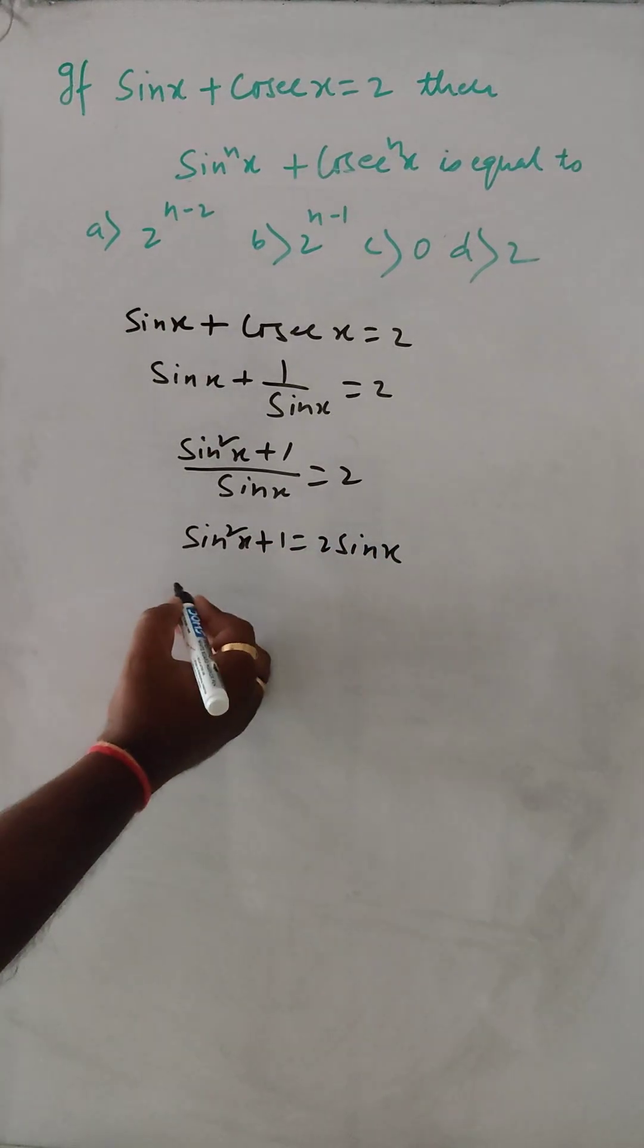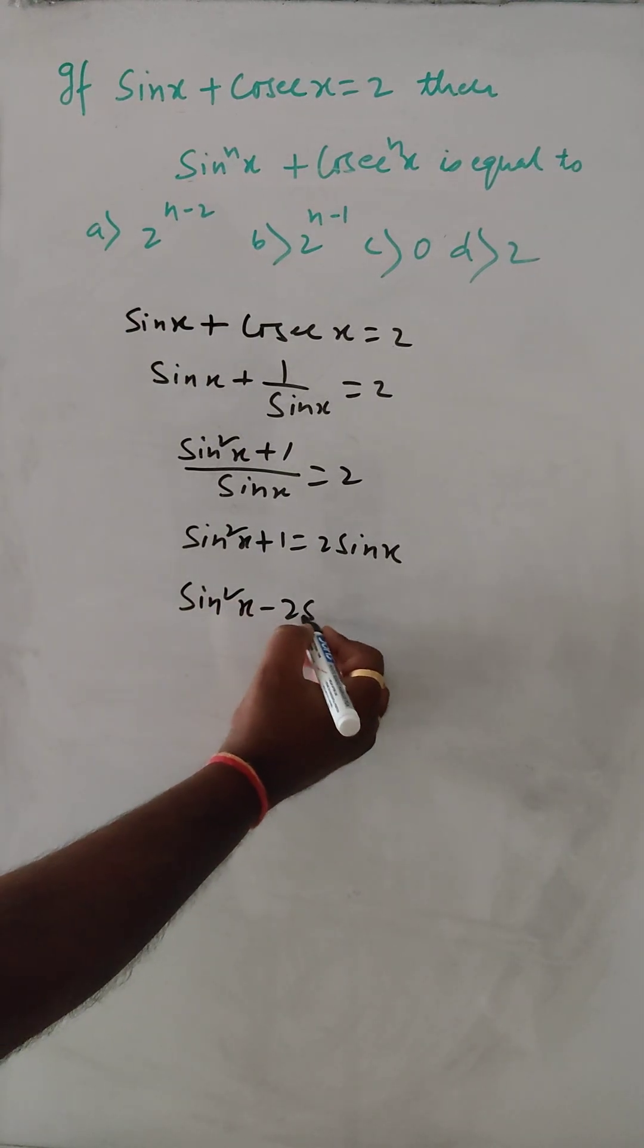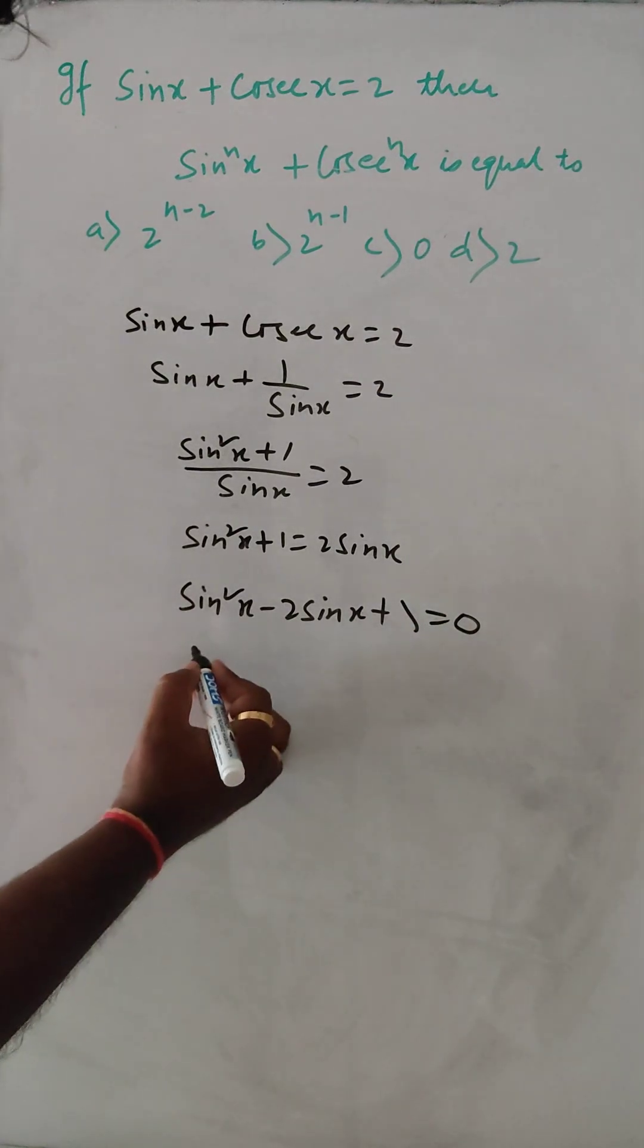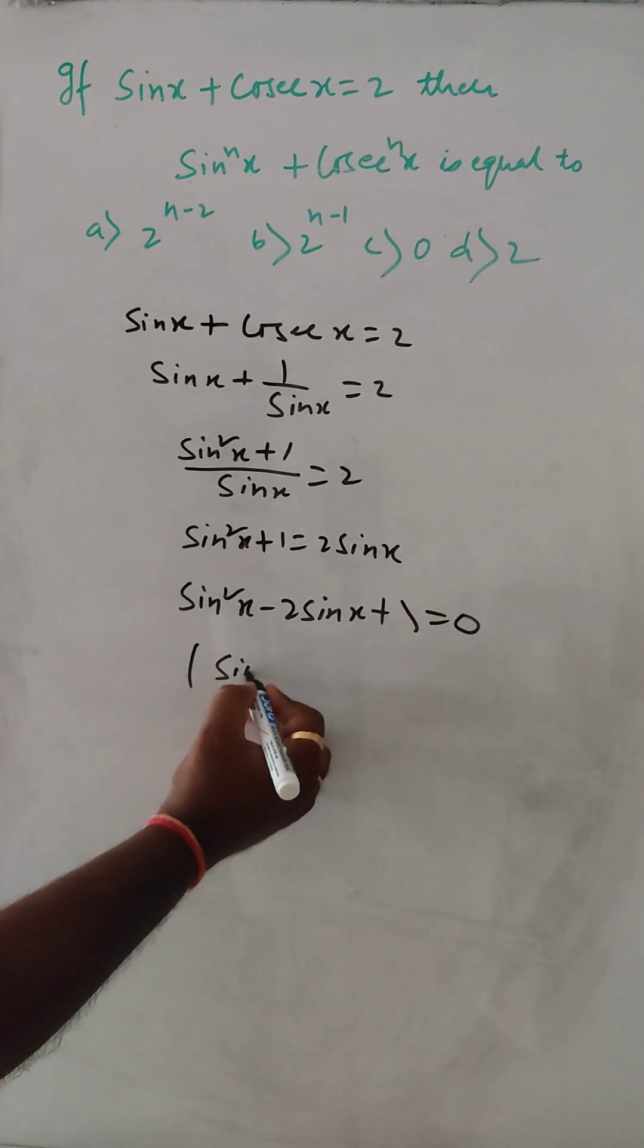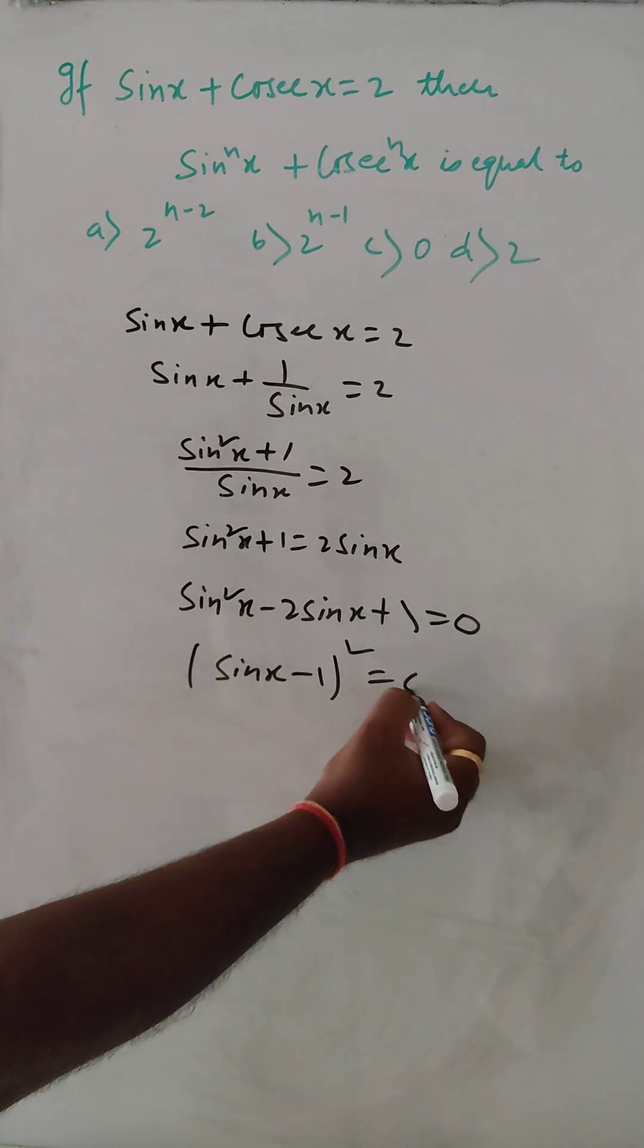Correct. Then sin square x minus 2 sin x plus 1 is equal to 0. Then here sin x minus 1 whole square is equal to 0.